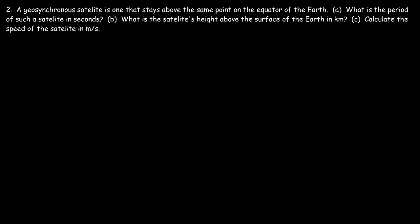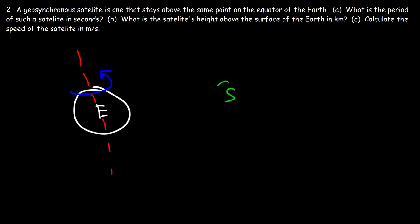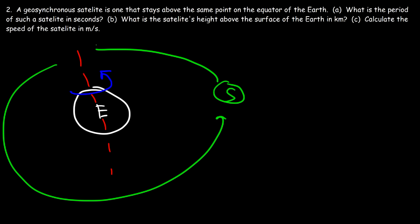Make sure you understand the difference between rotation and revolution. When an object rotates, it rotates about its own internal axis — like the Earth spinning around its internal axis. The satellite revolves around an external axis, which is basically the Earth's axis but outside of the satellite. So the satellite travelling around the Earth is revolving; the Earth spinning on its own axis is rotating.